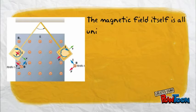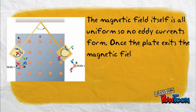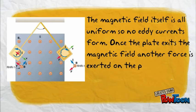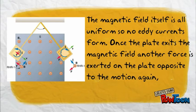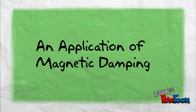The magnetic field itself is all uniform, so no eddy currents form. Once the plate exits the magnetic field, another force is exerted on the plate opposite to the motion again, slowing it down even more. Now we're going to look at an application of magnetic damping.